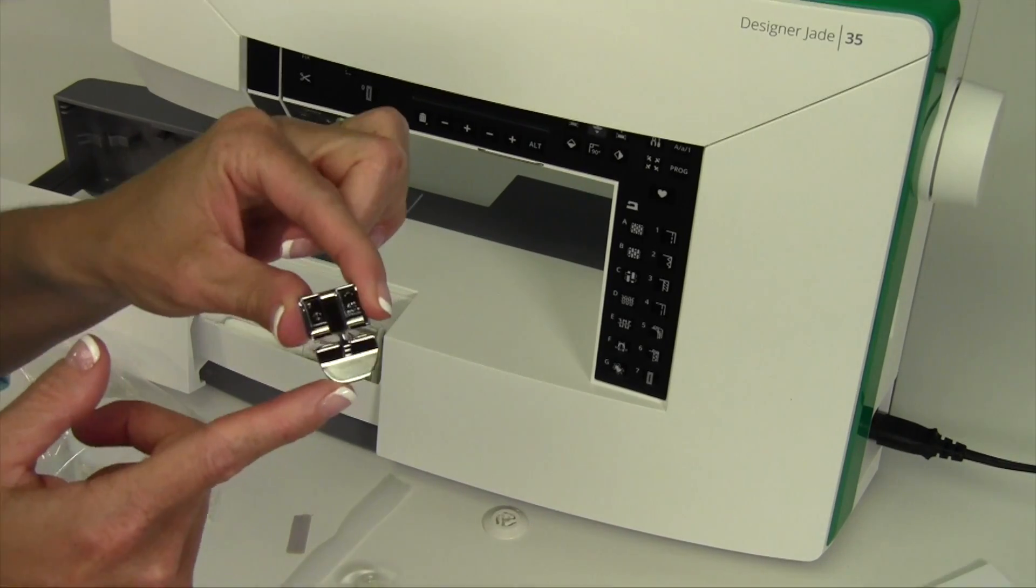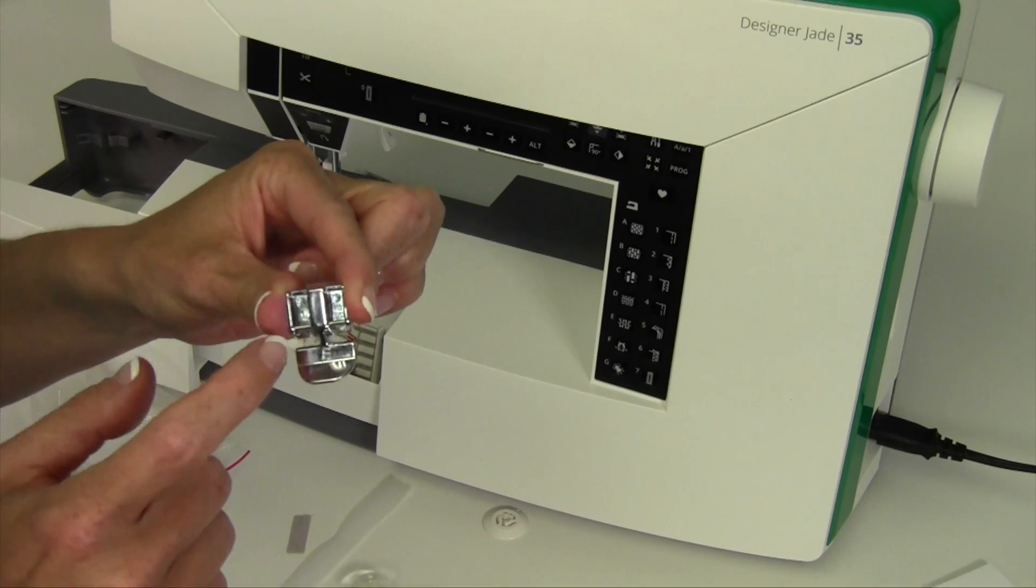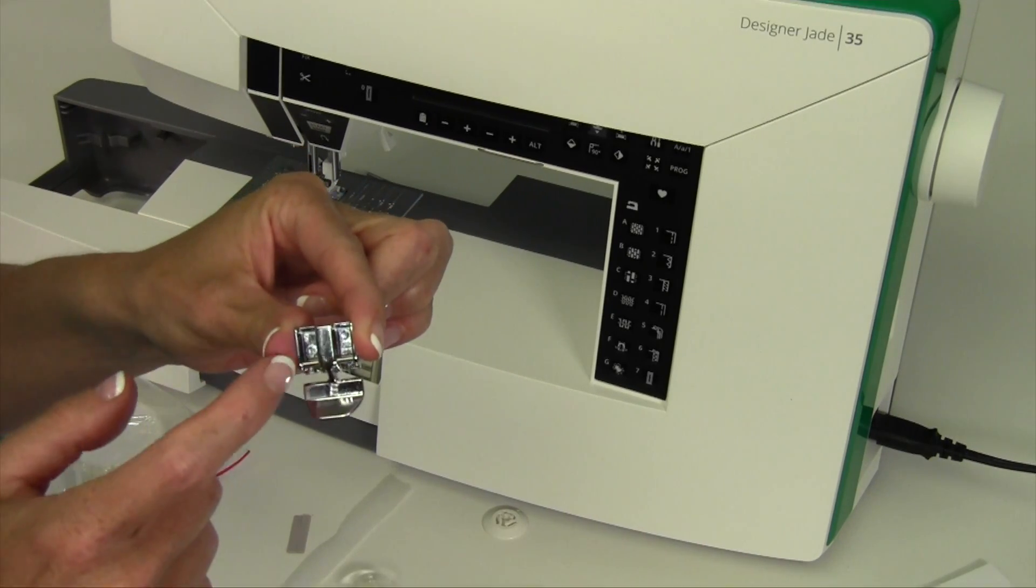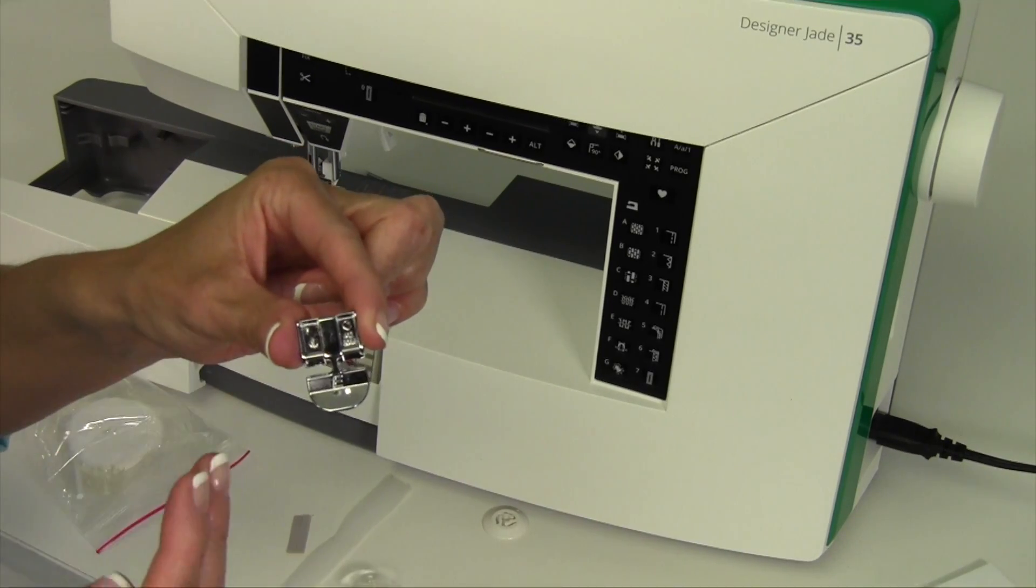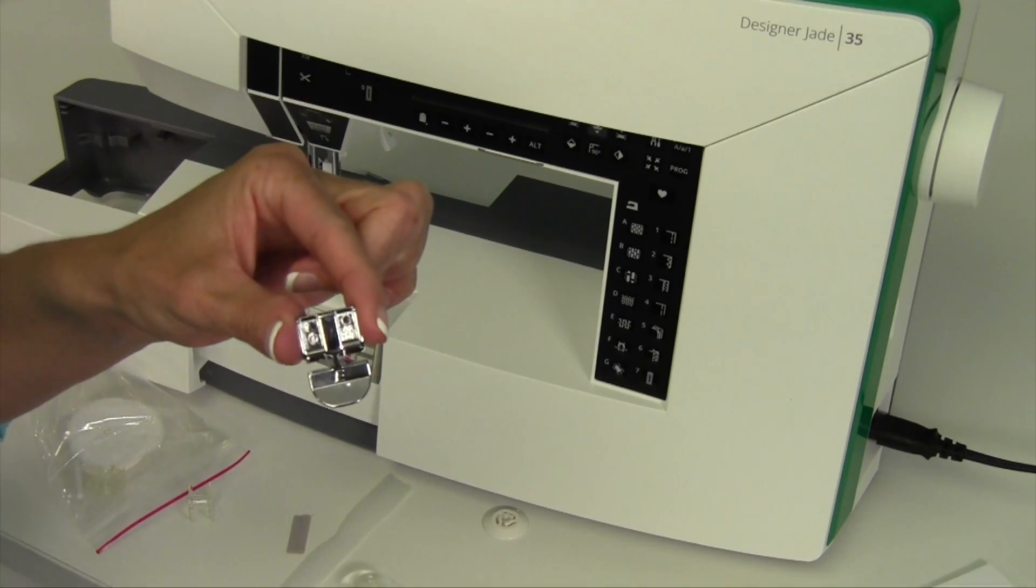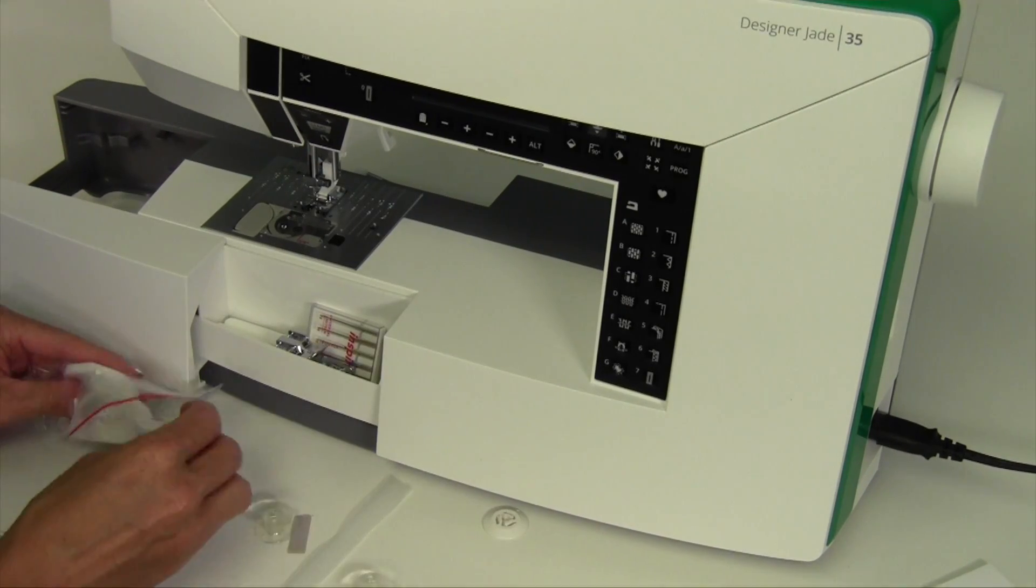Now this one is a zipper foot, letter E, and it will actually have two sides, a left side and a right side depending on what side of the zipper you're going down. We'll also do a video on the zipper foot. A few other things that come in with your accessories.